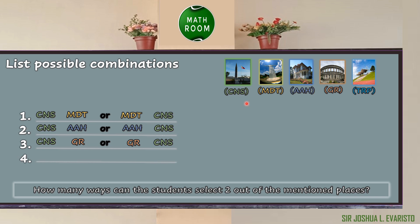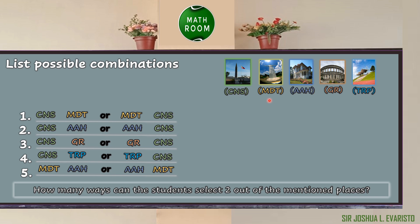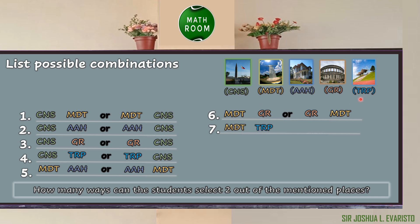The next combination is Capas National Shrine and Tarlac Recreational Park, or Tarlac Recreational Park and Capas National Shrine. For number five, we can also choose Monasterio de Tarlac followed by Aquino Ancestral Home, or Aquino Ancestral Home followed by Monasterio de Tarlac. For our sixth combination, we have Monasterio de Tarlac followed by Tarlac Recreational Park, or Tarlac Recreational Park followed by Monasterio de Tarlac.